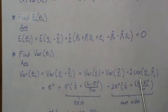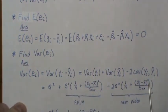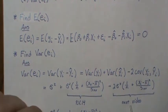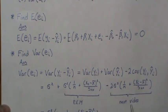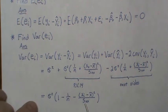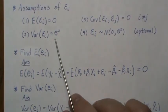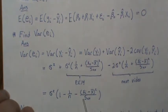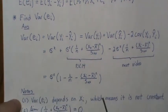The covariance term is derived on the next page. Combining all these, we get the variance of the residual, which is not a constant σ² — it depends upon xᵢ, so it's a non-constant variance.